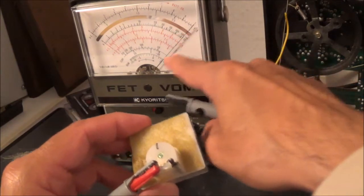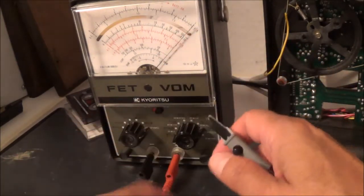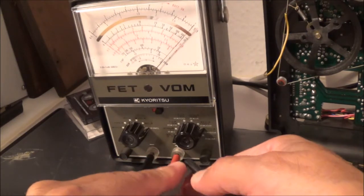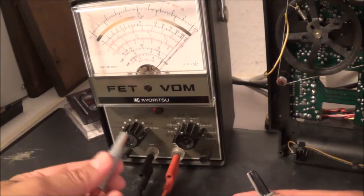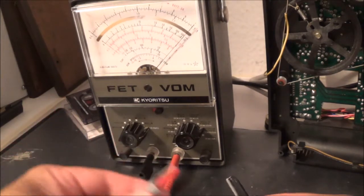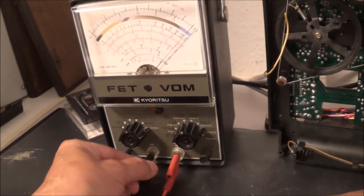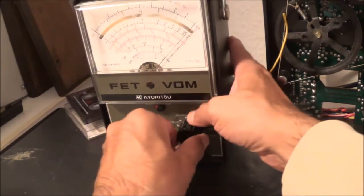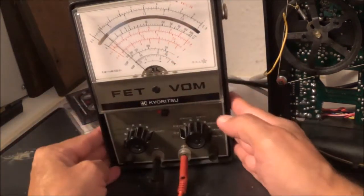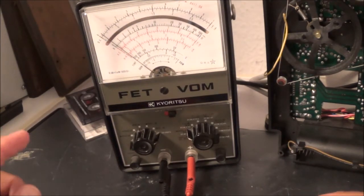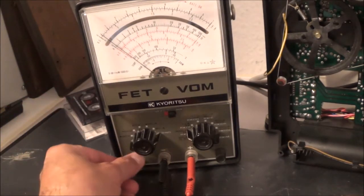This is showing open. Of course, if I short this together, nothing. Why is that? Okay, I'm not on the right position, right scale. So now I'm right here. You can see it's almost showing, or actually if I do the ohms adjust here, it's showing me a short circuit as it very well should.